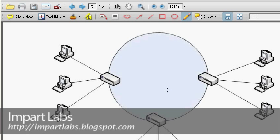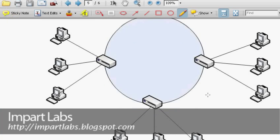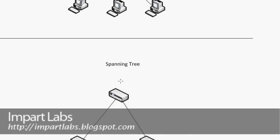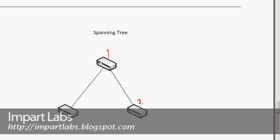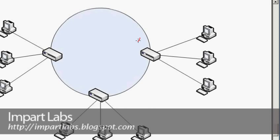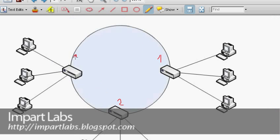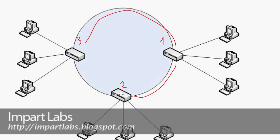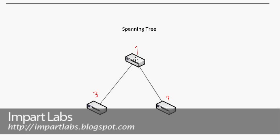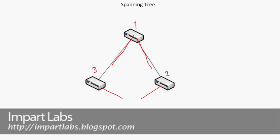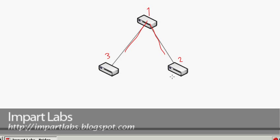To prevent this, something called a spanning tree was created. We give one bridge an ID of one with the highest priority, another a two, and another a three. What happens is that bridge one broadcasts to bridge two and bridge three, but the ports on bridge two and bridge three that connect to each other are simply blocked, so they cannot broadcast any packets received on those ports.